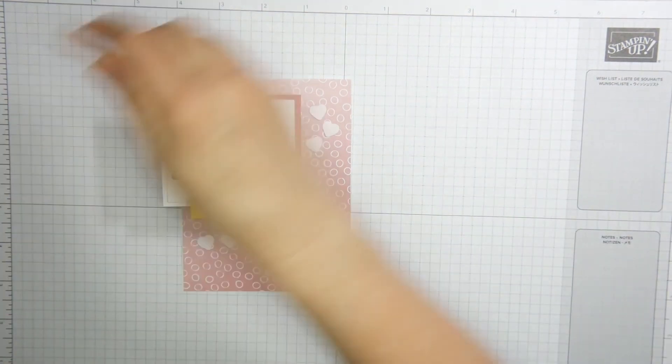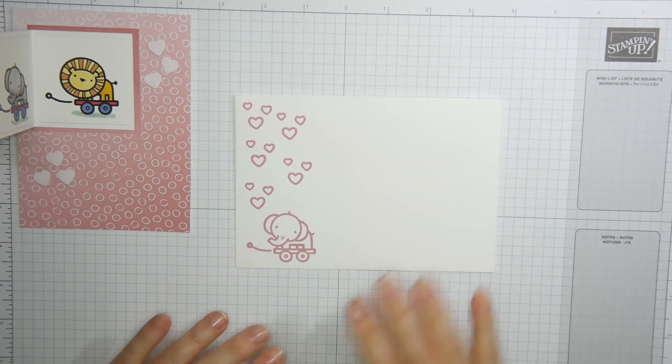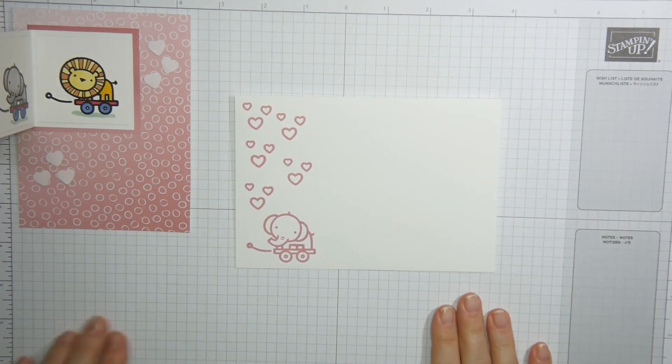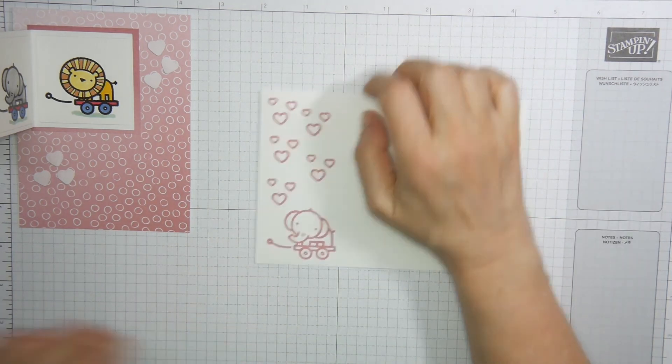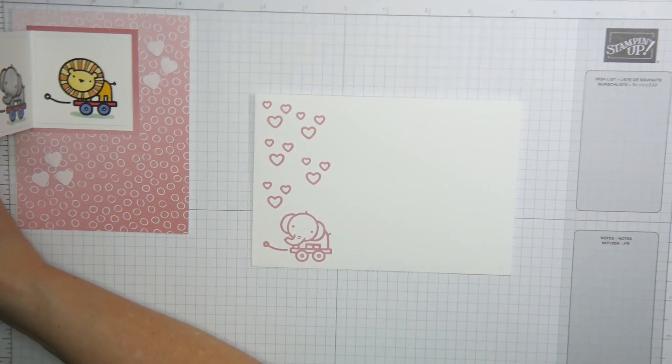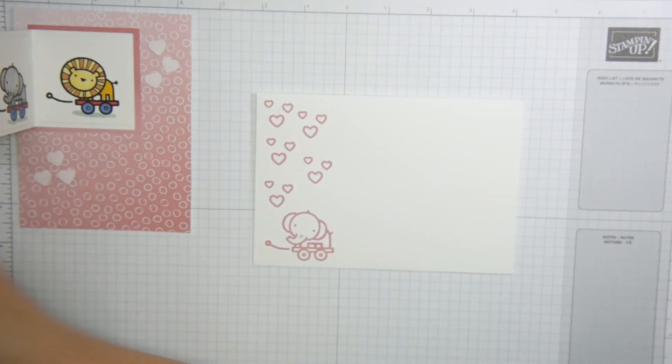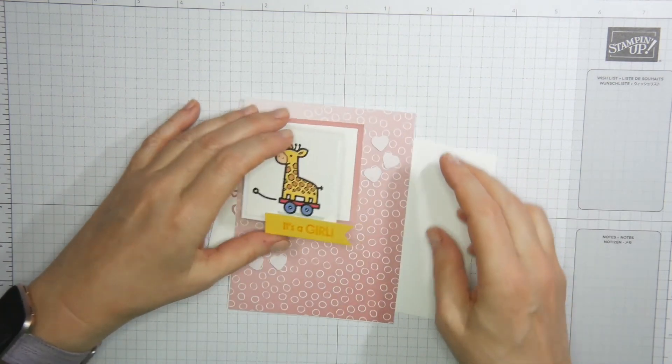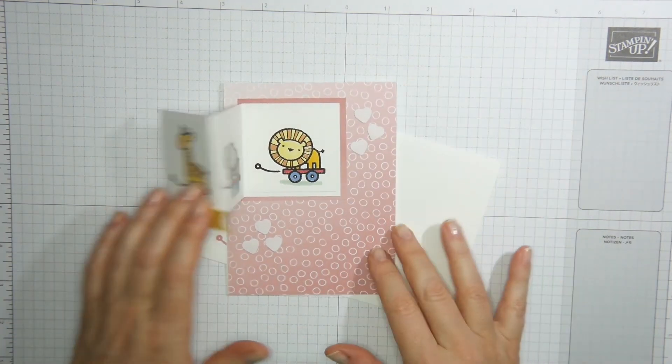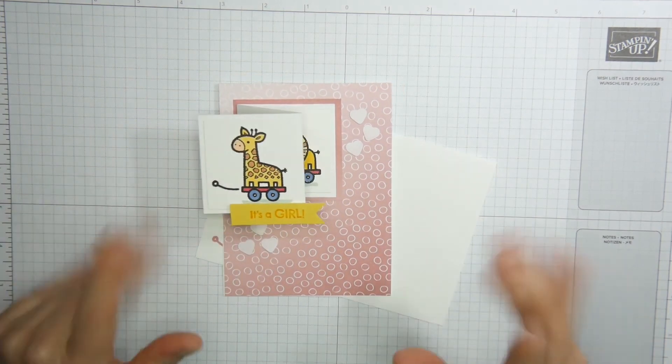Now some stamping on the envelope. You know what? I'm not going to show you. You get the point, don't you? You can stamp on the envelope. The little hearts are in the stamp set as well. And this makes a really nice card for a baby. Thank you very much for watching. Bye bye.